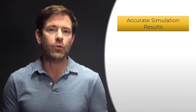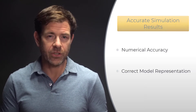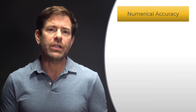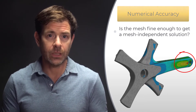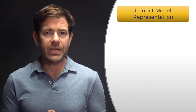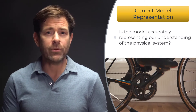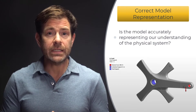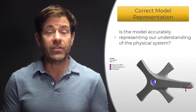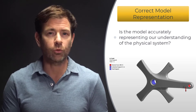We all desire accurate simulation results, and generally speaking, this takes two forms: numerical accuracy and correct model representation. In numerical accuracy, we answer the question of whether the mesh is fine enough to get a mesh-independent solution. In correct model representation, we focus on whether the model is accurately representing our understanding of the physical system. Numerical accuracy has been covered in another video lesson, so let's focus on correct model representation.